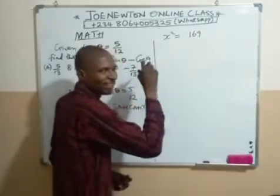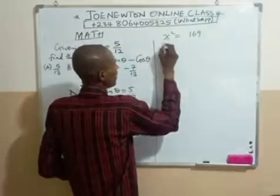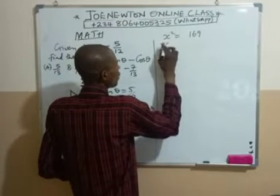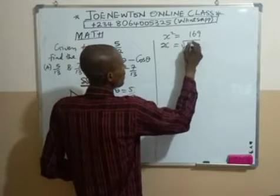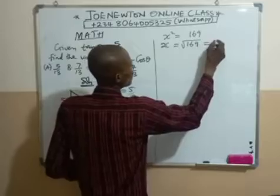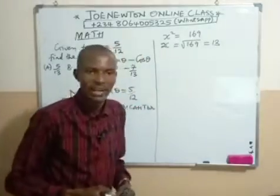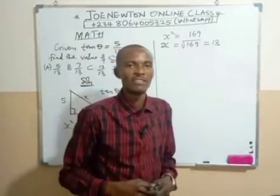Then, if we continue, we have that x squared is equal to 25 plus 144 would give us 169. Therefore, to find the value of x, we take the square root of both sides. Therefore, x is equal to square root of 169 which is equal to 13 because 13 times 13 will give us 169.